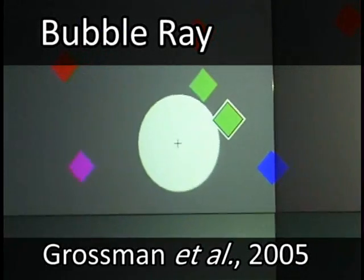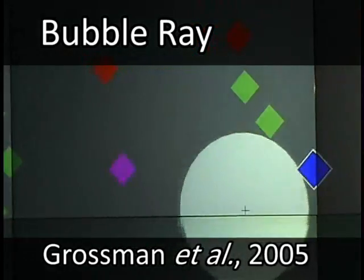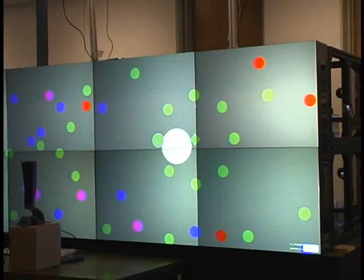Bubble ray automatically expands or contracts the size of the cursor to select the nearest target, thus removing any empty space between targets. Using this technique, sparse targets become easier to select, but dense targets still require precise selection.